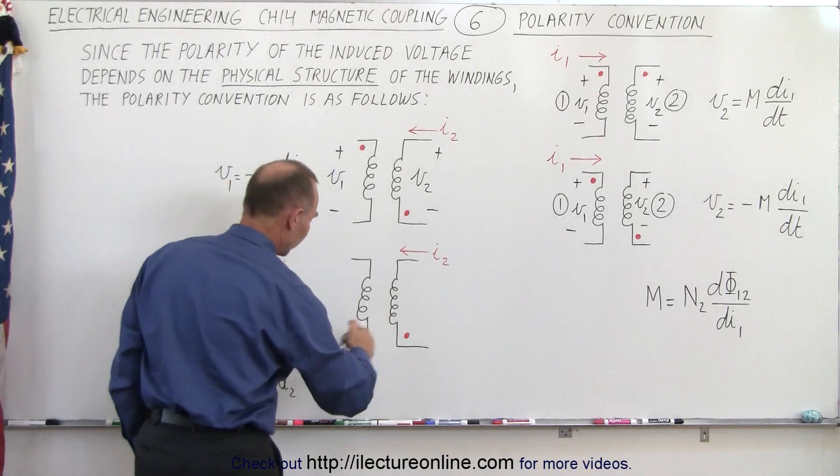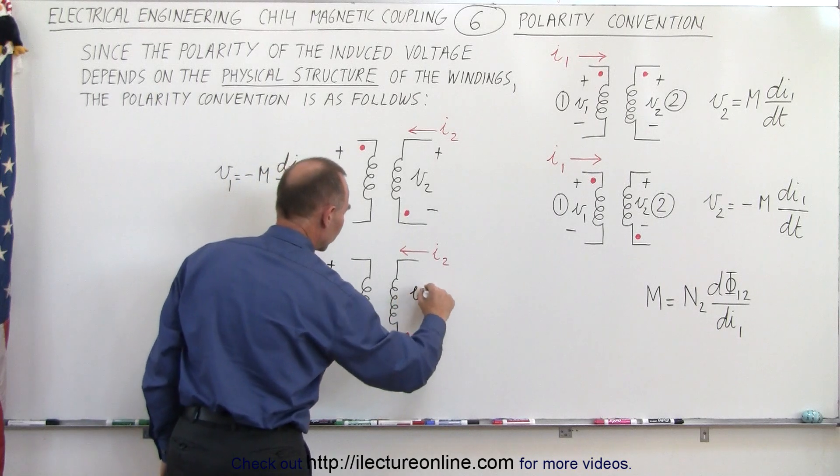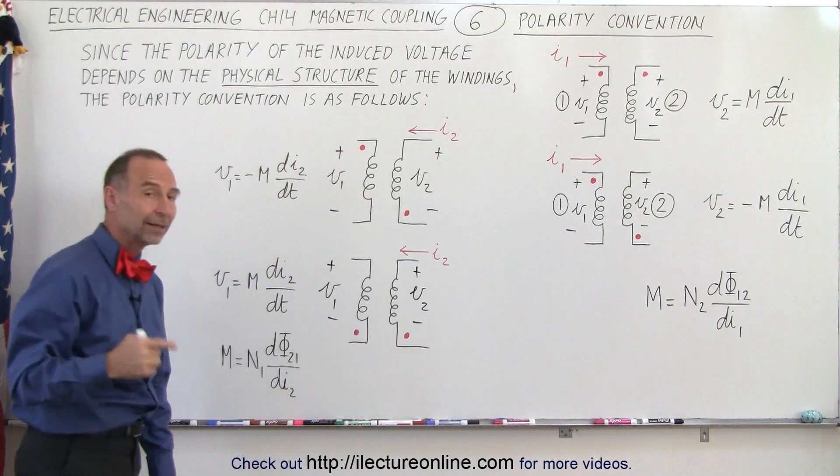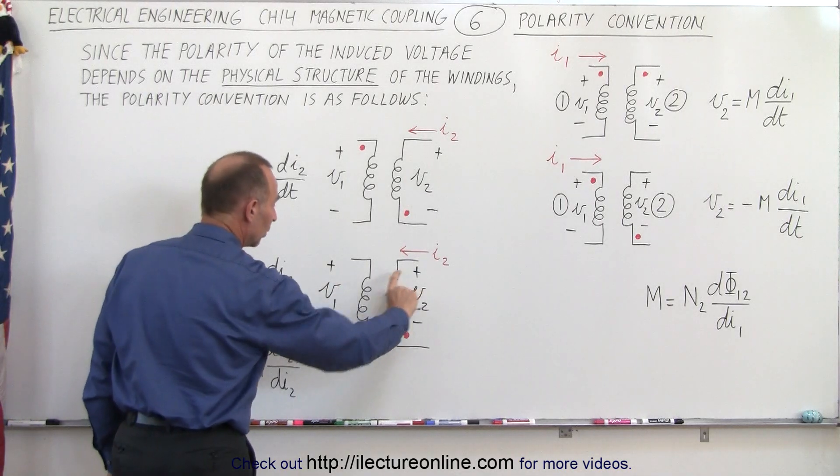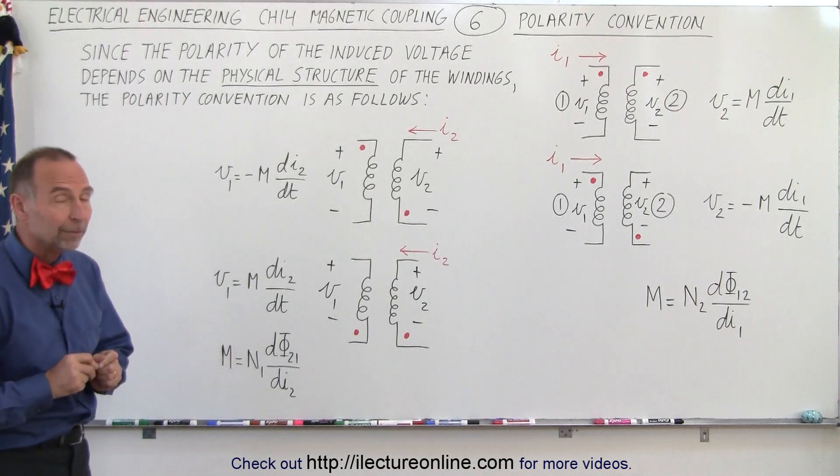And then if the dots are on the same side, we can see we have voltage 1 here, and we have voltage 2 there, like this. You can then see when the dots are on the same side, then we know that the polarity of voltage induced in 2 is equal to the polarity of the voltage induced in 1.